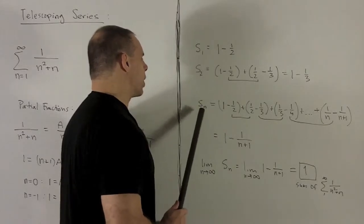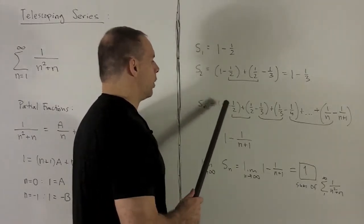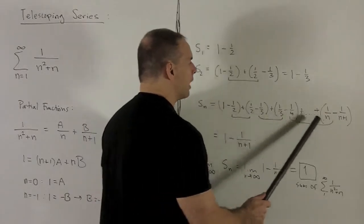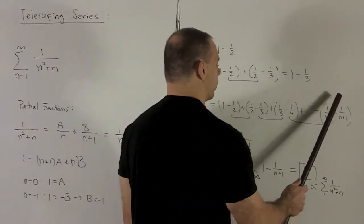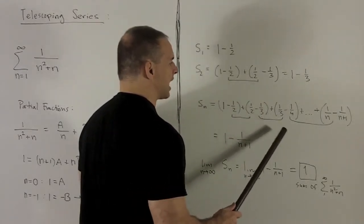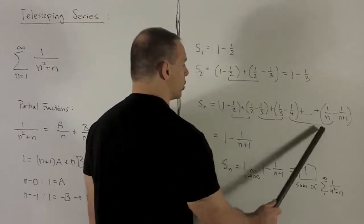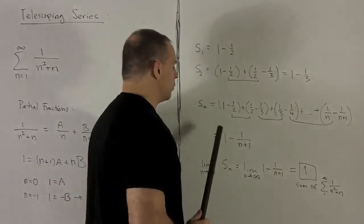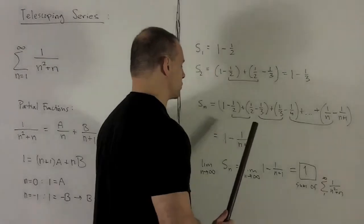So if I go to the nth partial sum, let's take a look. 1 minus 1 half, 1 half minus 1 third, 1 third minus 1 fourth, all the way up through 1 over n minus 1 over n plus 1. All the terms on the inside match up except for the sign. So what's going to happen is they're all going to drop out. They're going to telescope, and that's going to leave me with 1 minus 1 over n plus 1.